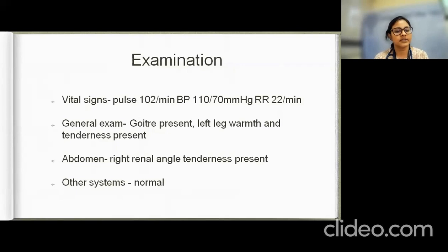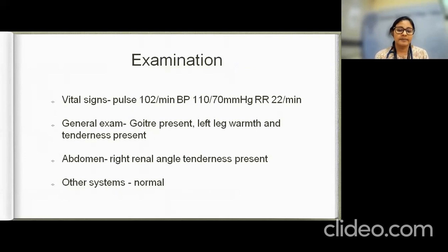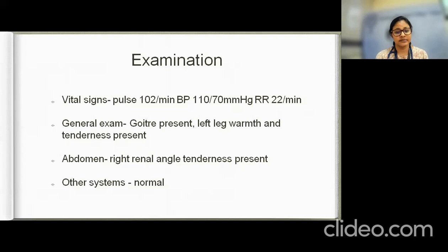On examination, her vital signs showed a pulse rate of 102 per minute, regular with normal character and volume, all peripheral pulses well felt. Blood pressure on the right upper limb was 110/70 mmHg with a respiratory rate of 22 per minute. General examination showed a goiter present, with left leg warmth and tenderness along the distal part of the leg, but no calf tenderness.